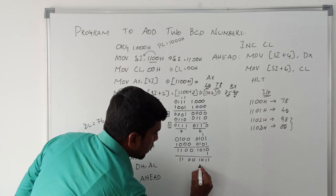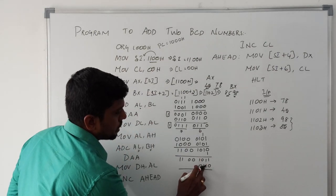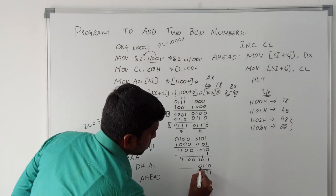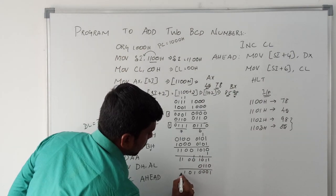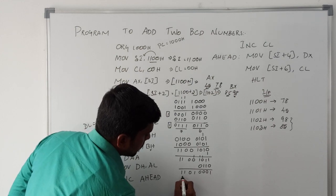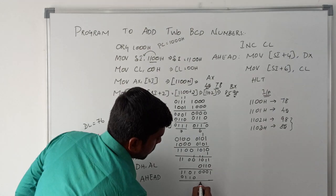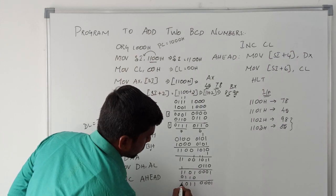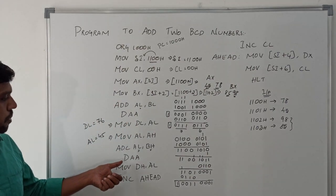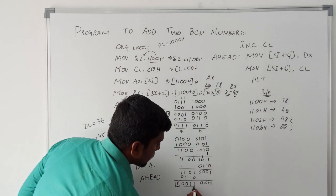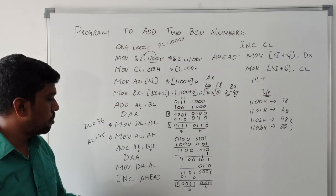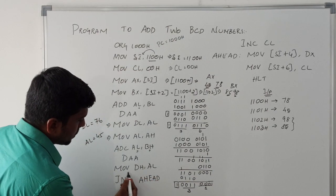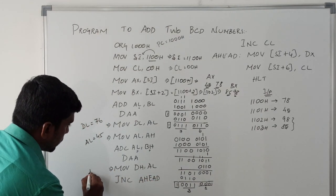You add 6 to the lower nibble first. After adding 6 with the lower nibble, the carry is propagated to the higher nibble. Then you add 6 with the higher nibble. After performing the DAA function, the result is 31H and the carry value is set to 1. The next instruction is MOV DH, AL — whatever value is present in AL is transferred to DH. After execution of this instruction, DH value is set to 31H.